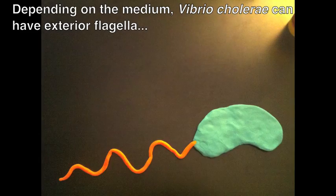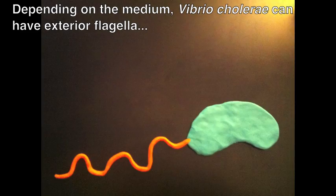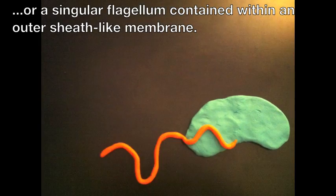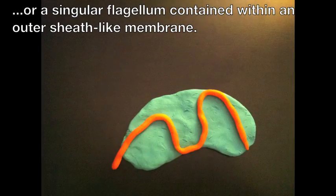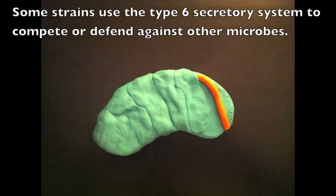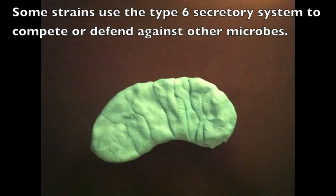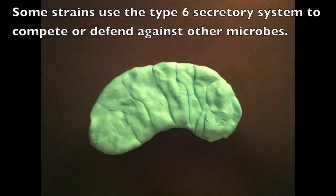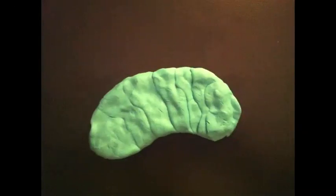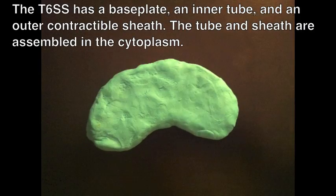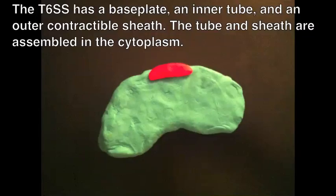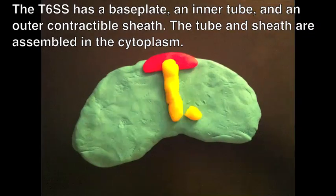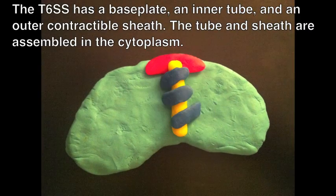Depending on the medium, Vibrio cholerae can have exterior flagella or a singular flagellum contained within an outer sheath-like membrane. Some strains use the type 6 secretory system to compete or defend against other microbes. The secretory system has a base plate, an inner tube, and an outer contractible sheath. The tube and sheath are assembled in the cytoplasm.